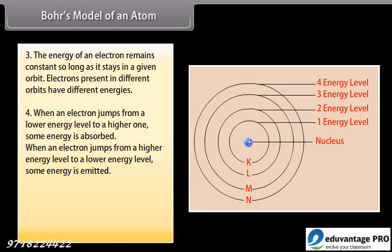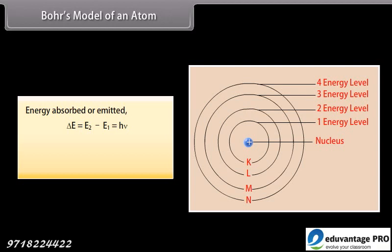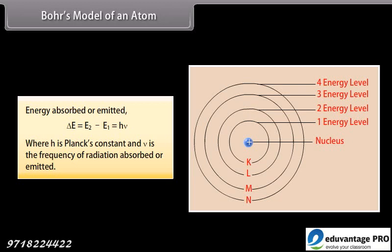When an electron jumps from a higher energy level to a lower energy level, some energy is emitted. The amount of energy absorbed or emitted is given by the difference of energies associated with the two levels. Energy absorbed or emitted, delta E is equal to E2 minus E1, which equals h nu, where h is Planck's constant, and nu is the frequency of radiation absorbed or emitted.